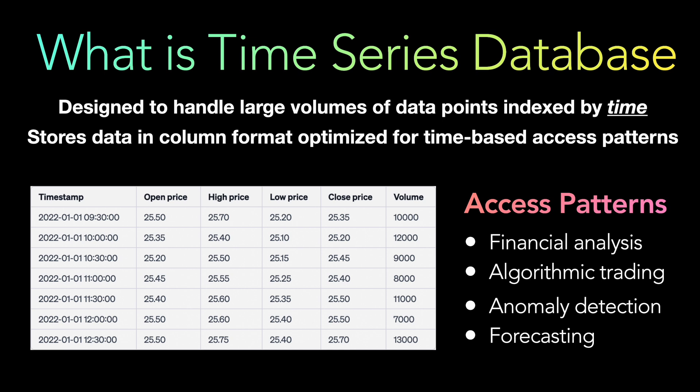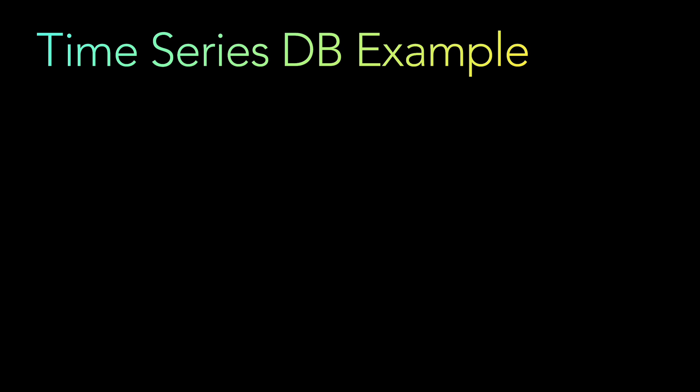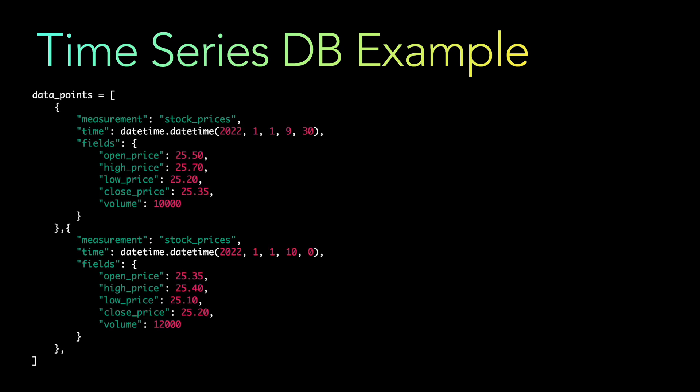If we represent this data in the form of code, we can put the data points in a JSON array, where each object contains a measurement field — say the database name — a time field for the timestamp, and the remaining fields like open price, high price, low price, close price, and volume.